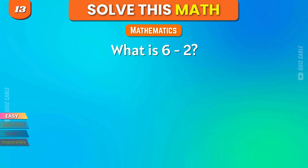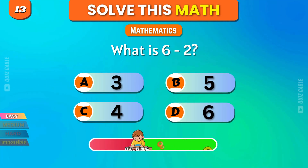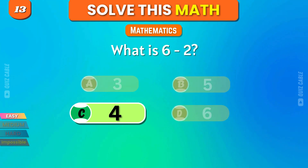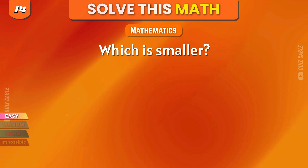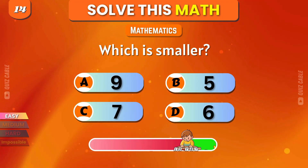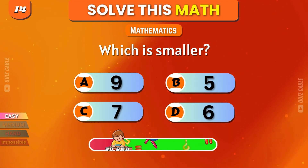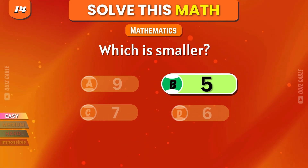What is 6 minus 2? 3, 5, 4, 6. Correct, 4. Which is smaller? 9, 5, 7, 6. Yes, 5. Well spotted.